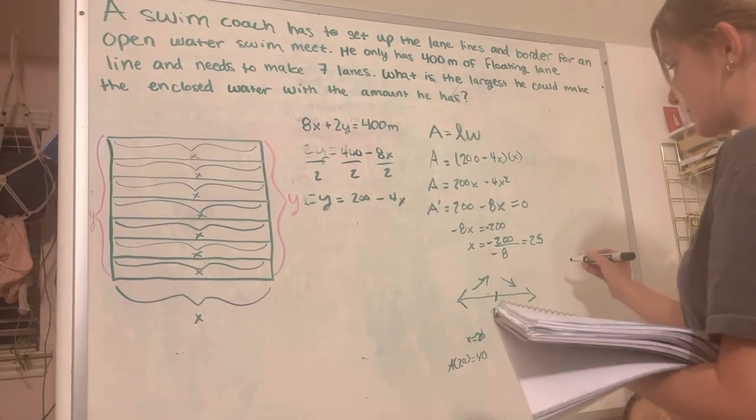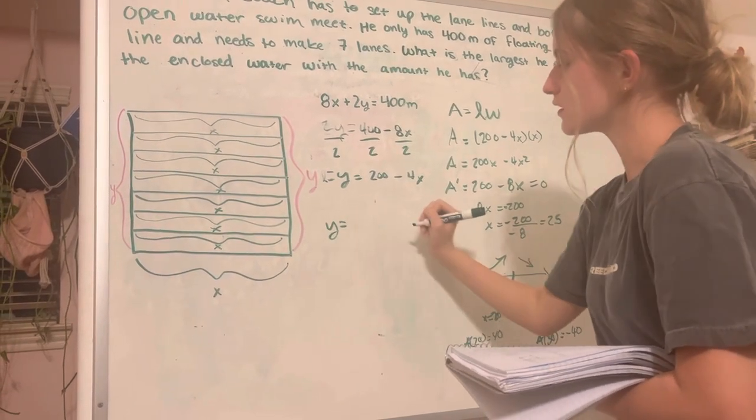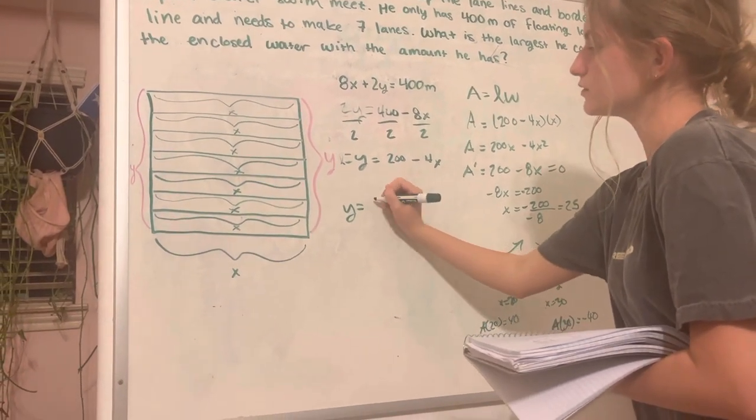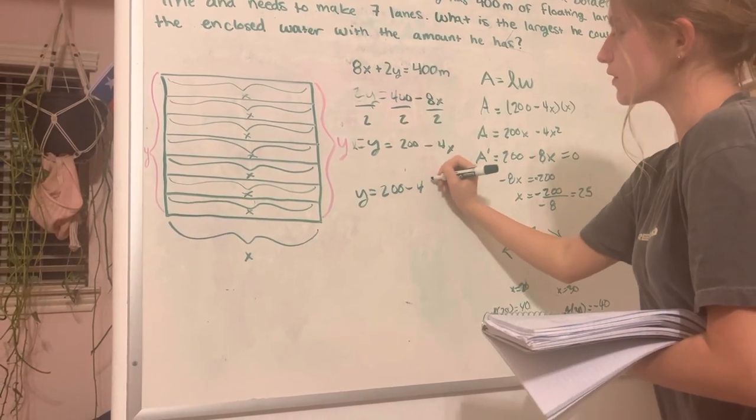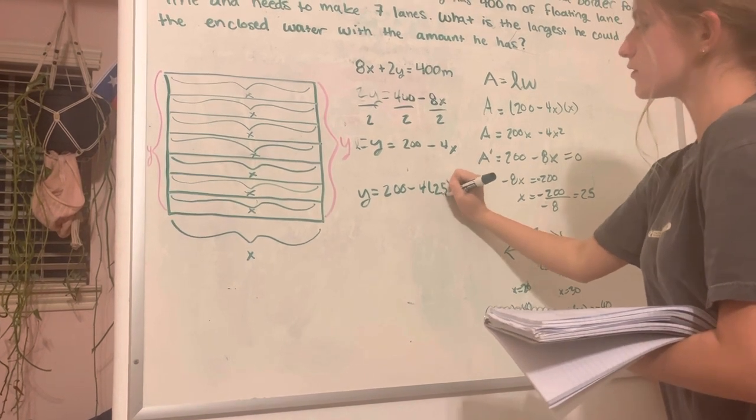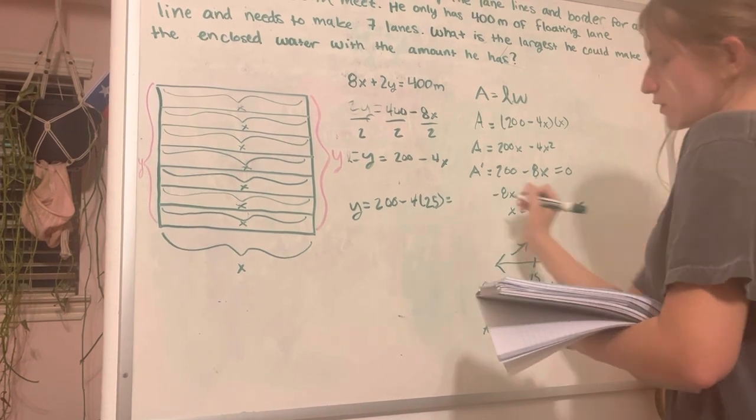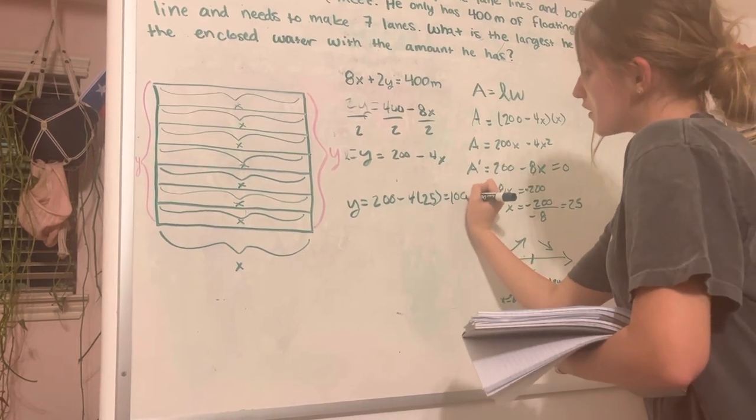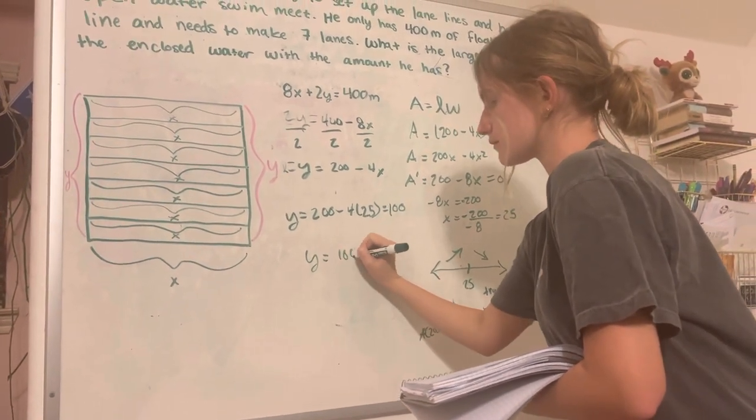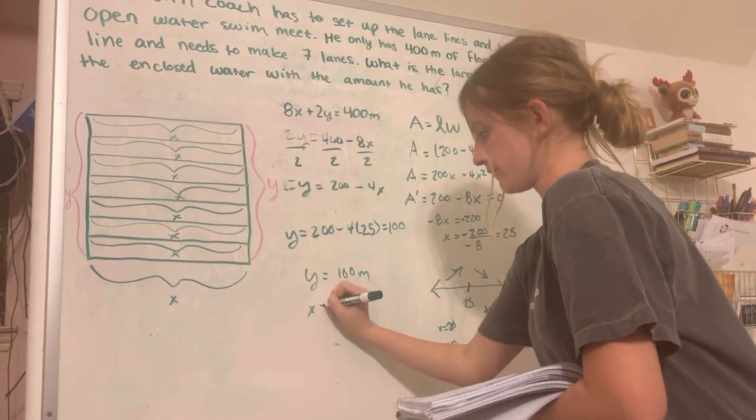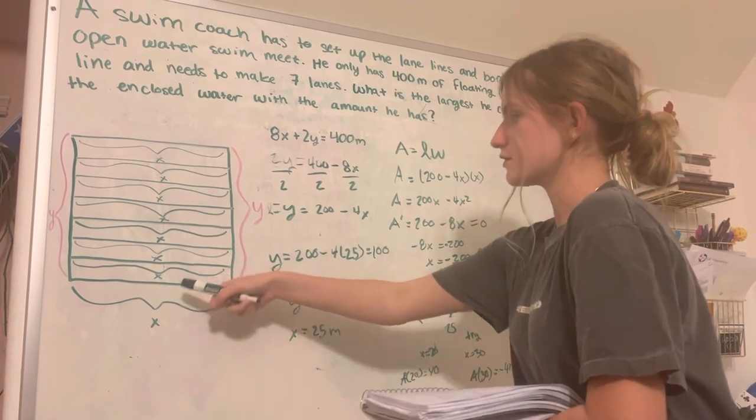Our x is going to be equal to 25. Now we can just plug that in to this equation. Our y is going to be equal to 200 minus 4 times 25, and that's going to be equal to 100. So our y value is going to be 100 meters, and our x value is going to be 25 meters for each of these lengths.